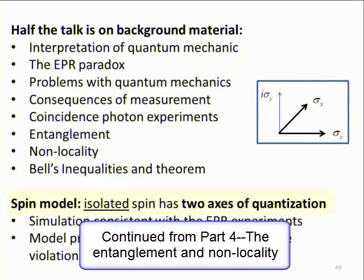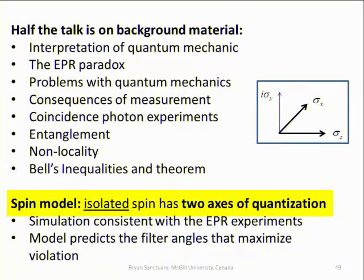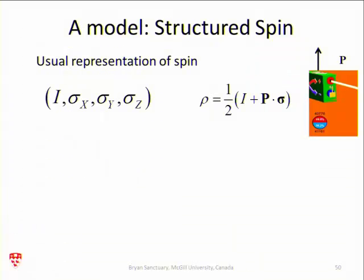So let me now finally get to my two-dimensional spin model. It's very simple. All I do is modify what we usually have for a spin one-half. Spin one-half is described by the three components of the Pauli spin vector operator and the identity.